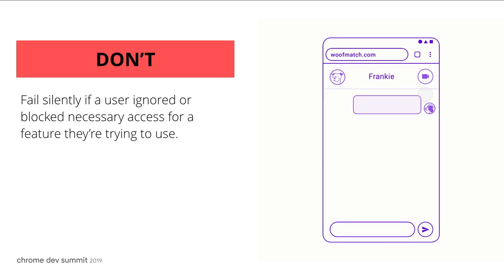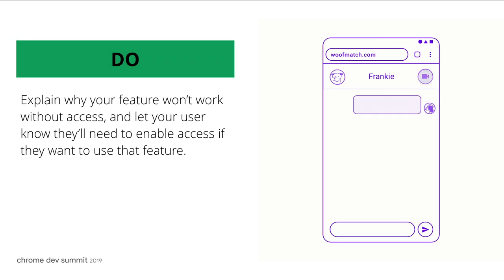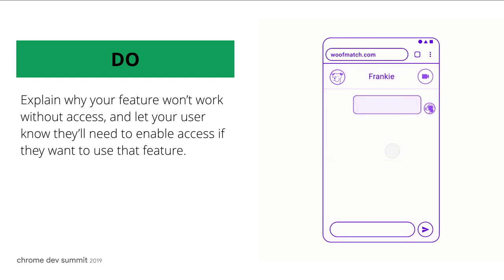Please don't fail silently if a user ignored or blocked necessary access for a feature they're trying to use. Do explain why your feature won't work without access, and let your users know they'll need to enable access if they want to use that feature.